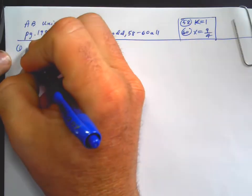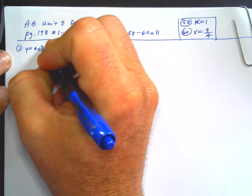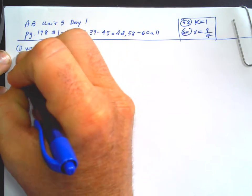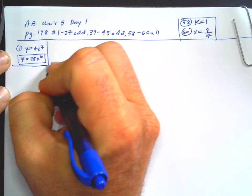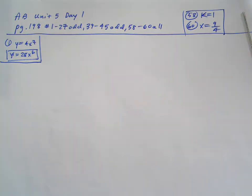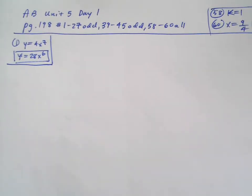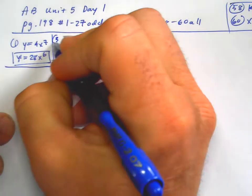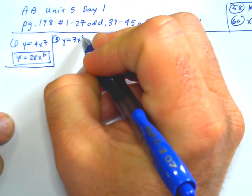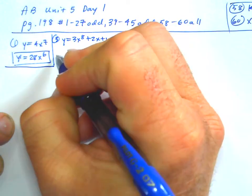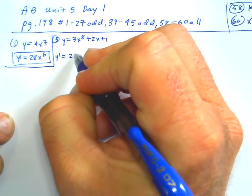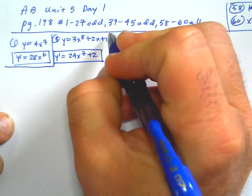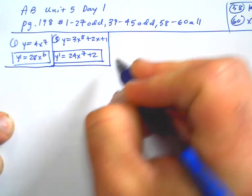Number one: y equals 4x to the seventh. So the derivative of that would just be, by the power rule, 28x to the sixth. Number three: y equals 3x to the eighth plus 2x plus 1. Y prime is 24x to the seventh plus 2. These ones should probably seem not bad to you guys — we've been doing power rule a while.